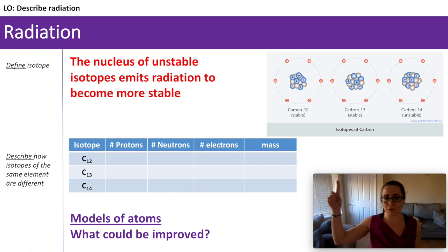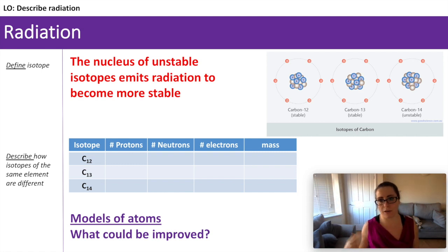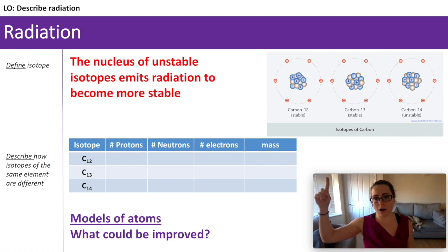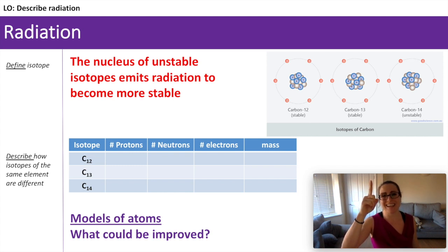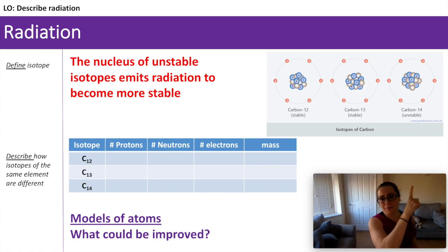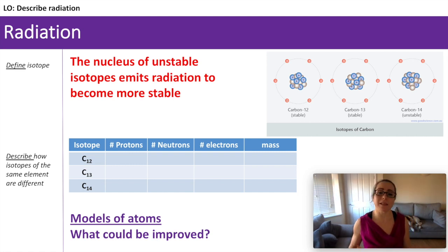For example, we've got three isotopes of carbon up here. Carbon-12 is stable — it does not emit any radiation. Carbon-13 is also stable; it does not emit any alpha or beta particles and is not a radioisotope. But carbon-14 is unstable — it will emit radiation. It is a radioisotope, a radioactive isotope of carbon.